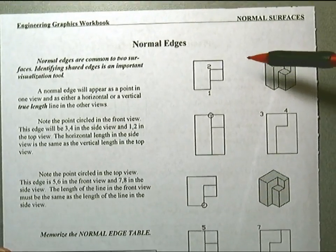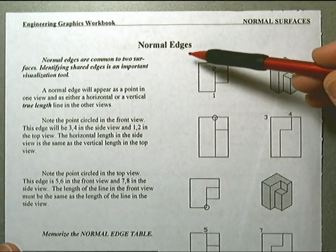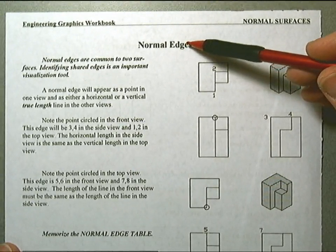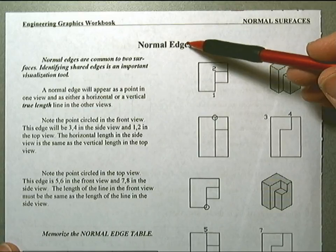Now, when those surfaces come together, they create normal edges. That's where two surfaces come together.